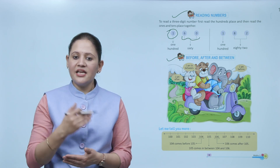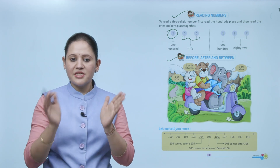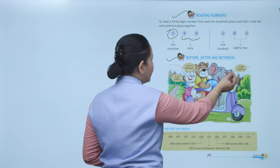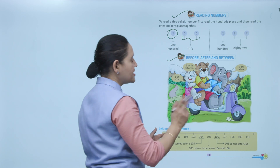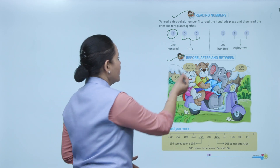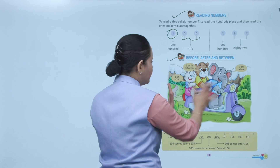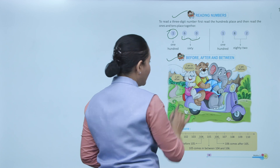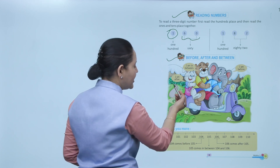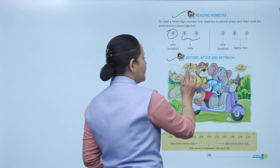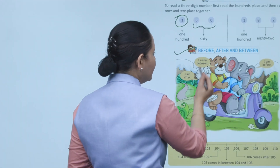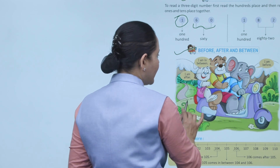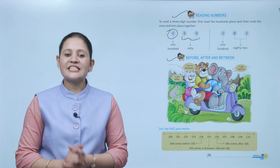Before means first, after means next, and between means in the middle of two. Here, the elephant is saying 'I am before.' The bear says 'I am between' — so the bear is between the rabbit and the elephant. The rabbit is after the bear. So the elephant is before the bear, and the bear is between the rabbit and the elephant.